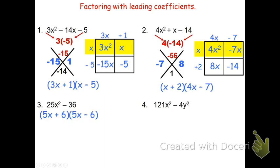Using the same idea on number 4: again it's a binomial separated by a minus sign, and both terms have squares — so it's a difference of squares. 11 times 11 is 121, and 2 times 2 is 4. Both have variables that are squared, so the factored form is 11x plus 2y times 11x minus 2y. Distributing to verify: 11x times 11x is 121x squared; 11x times negative 2y is negative 22xy, which cancels with 2y times 11x, which is positive 22xy; and 2y times negative 2y is negative 4y squared. This gives 121x squared minus 4y squared, confirming it's done correctly.